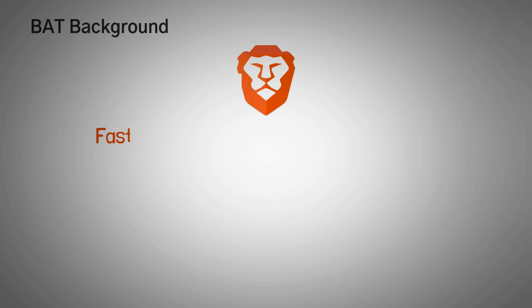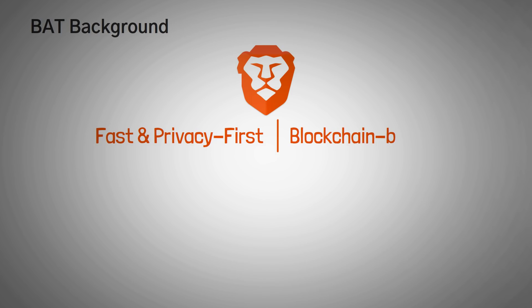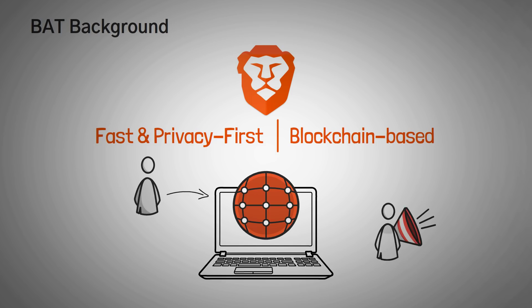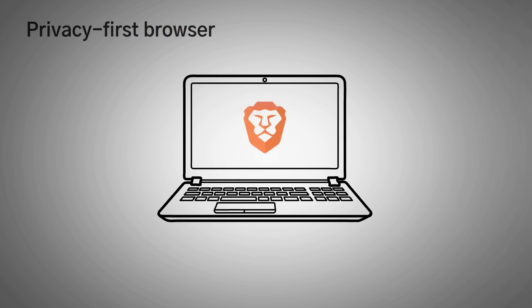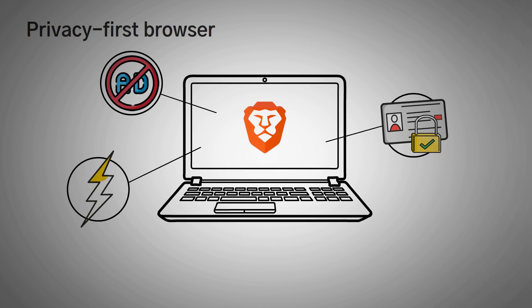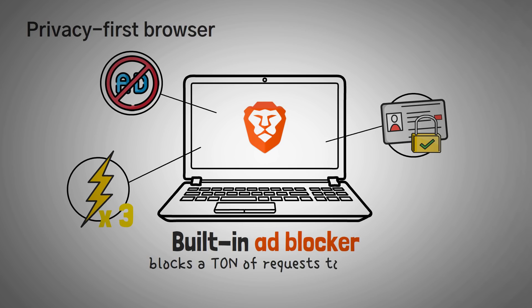To put it in one sentence, Brave is a fast and privacy-first web browser, as well as a blockchain-based digital advertising platform that is restructuring how users, advertisers, and publishers use the internet. It is a privacy-first browser that actually has ad blockers built in, and a few other features that help keep your personal information private. It's also very fast — up to three times faster than other web browsers — mostly because the built-in ad blocker blocks a ton of requests to other domains and resources that you don't need.